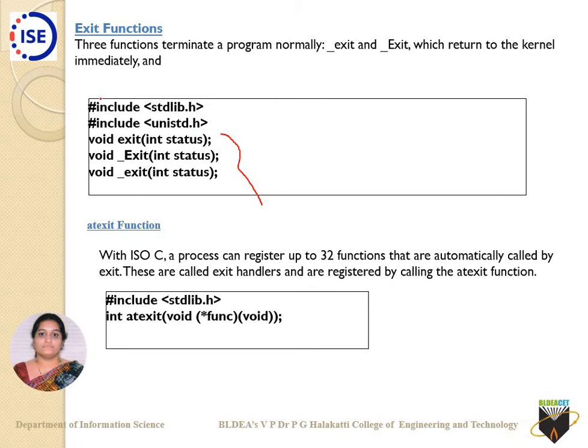The atexit function can register up to 32 functions. If you want to know the exit statuses of individual user-defined functions rather than the whole program, atexit will help. It takes a pointer to a user-defined function as its argument. Keep in mind that exit handlers registered with atexit are run in reverse order of registration.